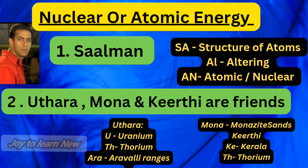The second shortcut is 'Uttra, Mona and Keethe are friends.' Take the name Uttra — U refers to uranium, TH refers to thorium, ARA refers to Aravalli ranges. Uranium and thorium are available in the Aravalli ranges. Mona and Keethe represent monazite sands of Kerala, rich in thorium. KE stands for Kerala, TH stands for thorium — monazite sands of Kerala are rich in thorium.